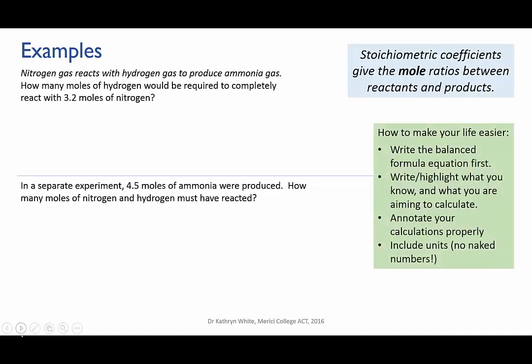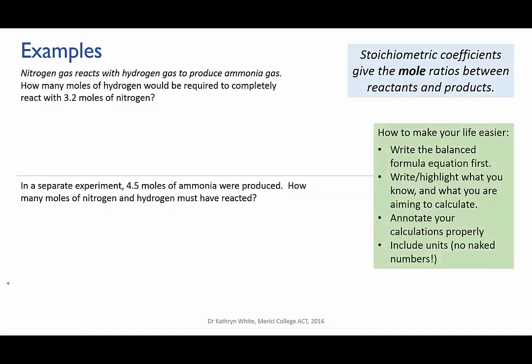So here are two problems. If you're feeling confident, pause the video now and try to solve them for yourself before I go through them. Let's try the first one. We have nitrogen gas reacts with hydrogen gas to produce ammonia gas. How many moles of hydrogen would be required to completely react with 3.2 moles of nitrogen? The first step is to write out and balance the equation. Without the stoichiometric coefficients from the balanced equation, you can't do any stoichiometry. This also means you need to take care to get your chemical formulae right, because it's impossible to balance the equation if the formulae are wrong.